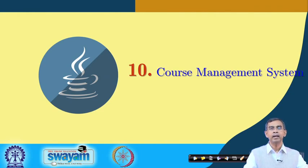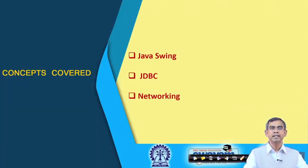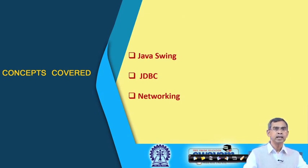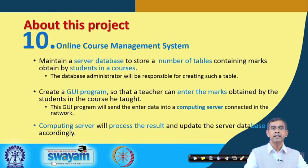It is a starting point and you can extend this project by adding your own ideas. For this project, the skill set required includes Java Swing, JDBC, and networking knowledge. The idea involves maintaining a server database that stores a number of tables — one table for each subject. For example, if a student is taking physics, maths, and chemistry, then three tables need to be maintained.